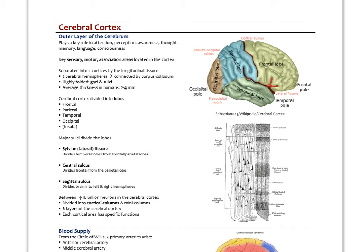There are key sensory, motor, and association areas throughout the cortex. We can separate the cerebral cortex via the longitudinal fissure into two hemispheres — right and left. They're connected by the corpus callosum and are highly folded into gyri and sulci. The average thickness of the cerebral cortex is only about two to four millimeters, yet all of your conscious activities occur in that thin layer. The gray matter in this area contains about 75% of the cell bodies of all neurons in the body.